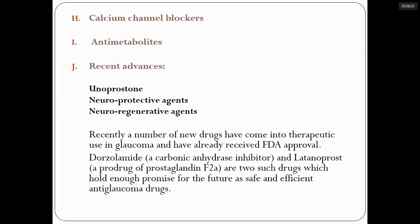Calcium channel blockers and anti-metabolites are used mainly in secondary glaucoma or congenital glaucoma treatment. Other drugs include unoprostone, which is a prostaglandin analog, neuroprotective drugs, and neuroregenerative drugs like brimonidine. A number of new drugs have come into therapeutic use in glaucoma and received FDA approval, notably dorzolamide (a carbonic anhydrase inhibitor) and latanoprost (a prostaglandin F2-alpha analog), which have lower side effects and are very effective.